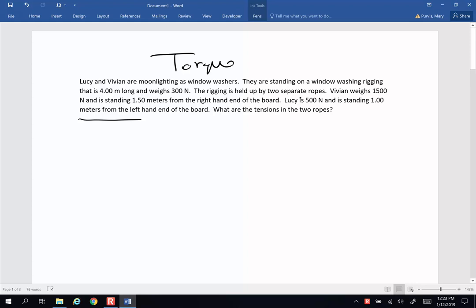They're standing on a window washing rigging that's four meters long and weighs 300 newtons. The rigging is held by two separate ropes. Vivian weighs 1,500 newtons and is 1.5 meters from the right end of the board. Lucy is 500 newtons and is standing one meter from the left end of the board. I want to know what are the tensions in the two ropes. So let's start by drawing a decent picture.